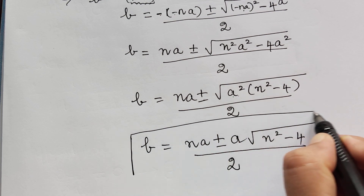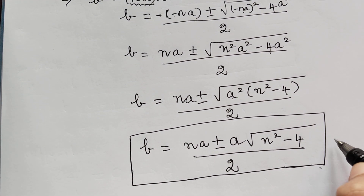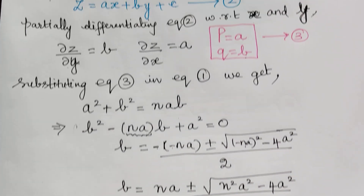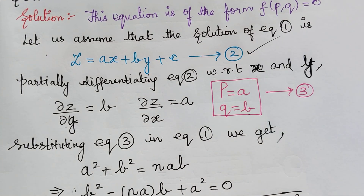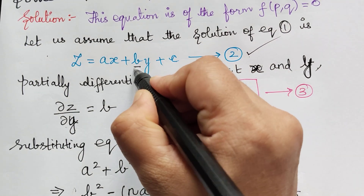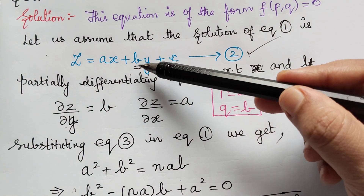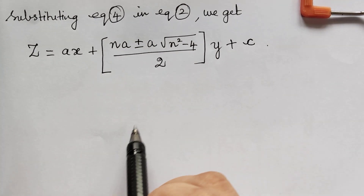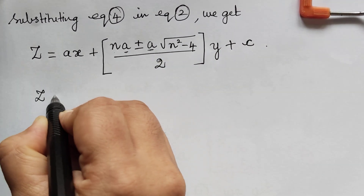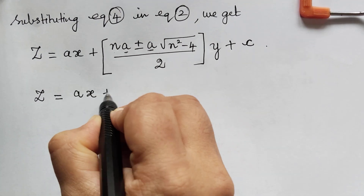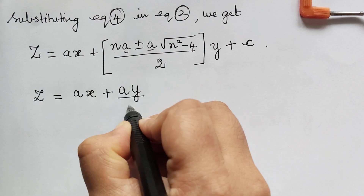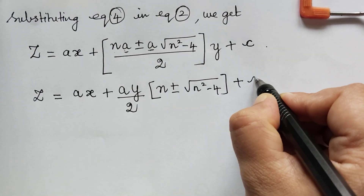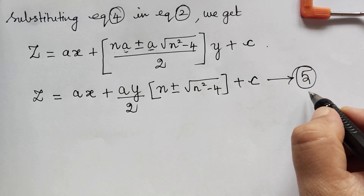This gives us the value of b; mark this as equation 4. The next step is to substitute equation 4 in the assumed solution equation 2. After substituting, taking a common, the equation becomes z = ax + a·(y/2)·[n ± √(n² − 4)] + c. Mark this as equation 5, which gives us the complete solution.